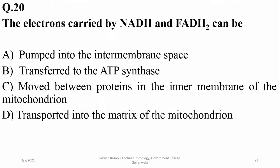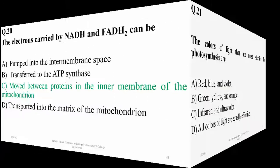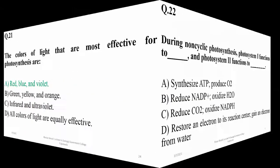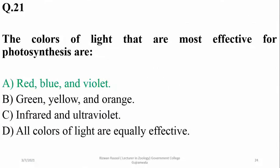The electrons carried by NADH and FADH2 can be moved between proteins in the inner membrane of the mitochondrion to generate a proton gradient, and then that gradient can be used to generate ATP.